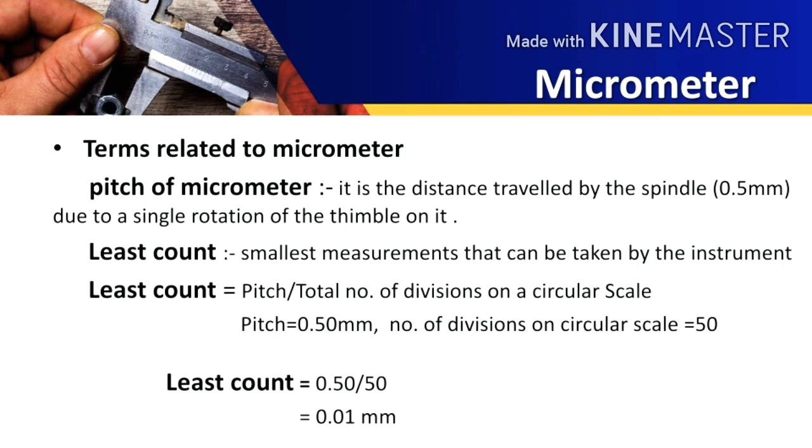So the pitch we have seen is 0.5 mm and the total number of divisions on the circular scale is 50. So the least count will be 0.01 mm.